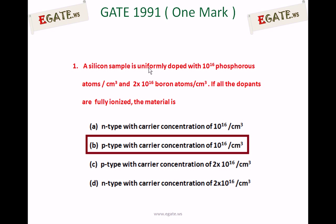Whenever a silicon sample, i.e. an intrinsic semiconductor, is added with both pentavalent and trivalent impurities, and all the dopants are fully ionized, then the type of material depends on the concentration of atoms. We will see the details now.